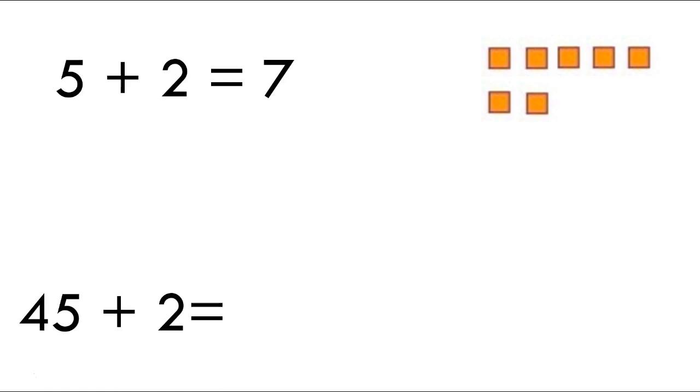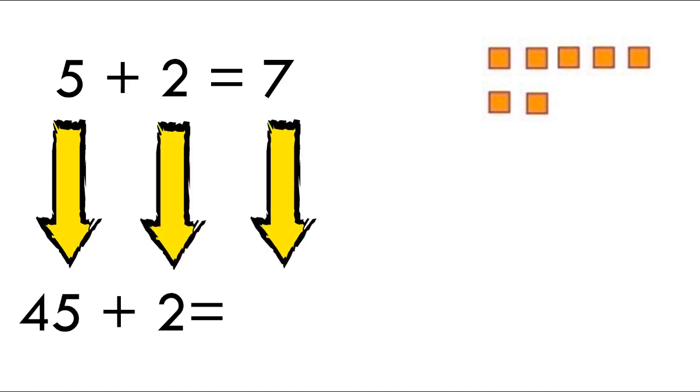Now those number families can also help us when we're trying to add and subtract bigger numbers. Let's take 5 plus 2 equals 7. We added 5 ones plus 2 ones. We have 5 ones plus 2 more, which gave us 7 ones. Now let's take 45 plus 2 and see what we get. If you notice, the 5 is the same, and the 2 is the same. So down here we have 5 ones plus 2 ones, so we're probably going to have 7 ones here.